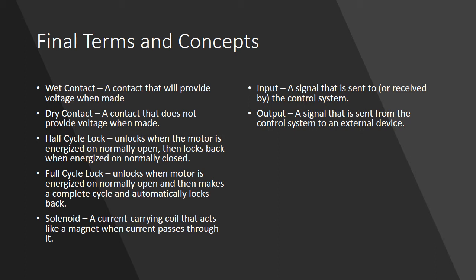A half cycle lock is a lock that when the motor is energized on normally open, the lock pulls back, and then when normally closed is energized, the lock pushes back to the lock state. Full cycle locks, on the other hand: when the motor is energized through the normally open, the lock runs a complete cycle and automatically locks back.